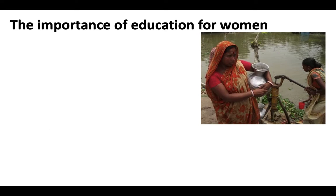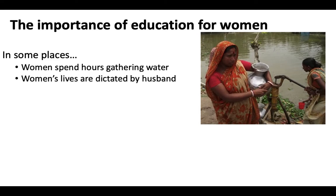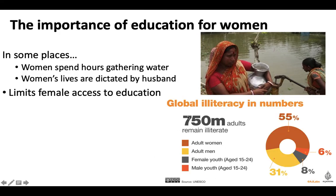I'm going to talk about a couple of these because there are some interesting patterns you may not be aware of. One is the importance of education for women specifically. Education is important for everybody, but it plays a particularly important role for women in regards to world population. In some places, women don't have equal access to education — they spend hours gathering water while men go to school, or cultural norms restrict their access. There are 750 million illiterate adults around the world — about one-tenth of the population — and of those, almost two-thirds are women: 55% adult women and 8% female youth. That's not a coincidence.